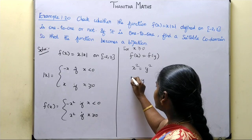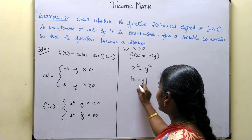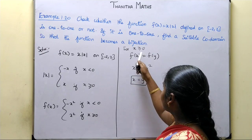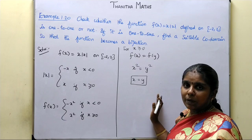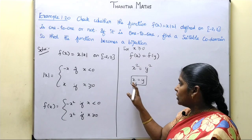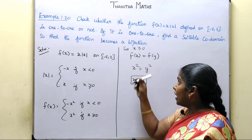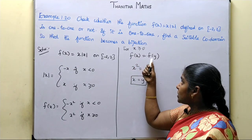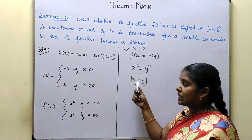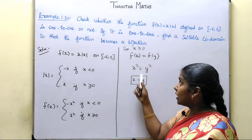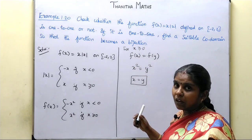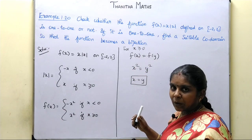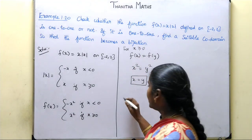Removing the square gives plus or minus, but since we have positive values, plus x equals plus y. So x equals y. Therefore, when f of x equals f of y for positive values, we get x equals y.